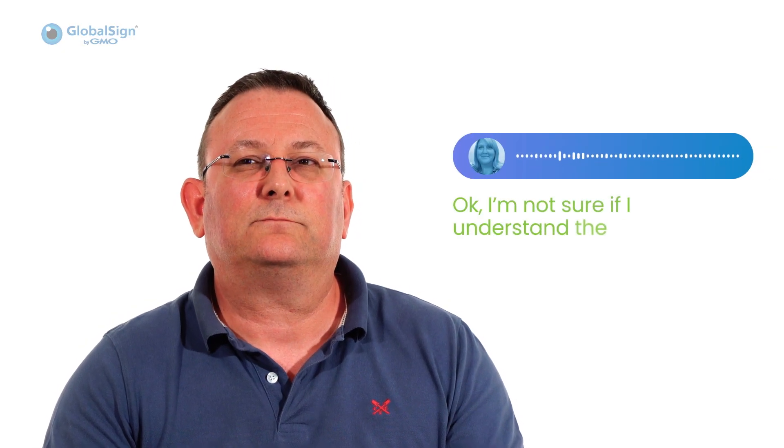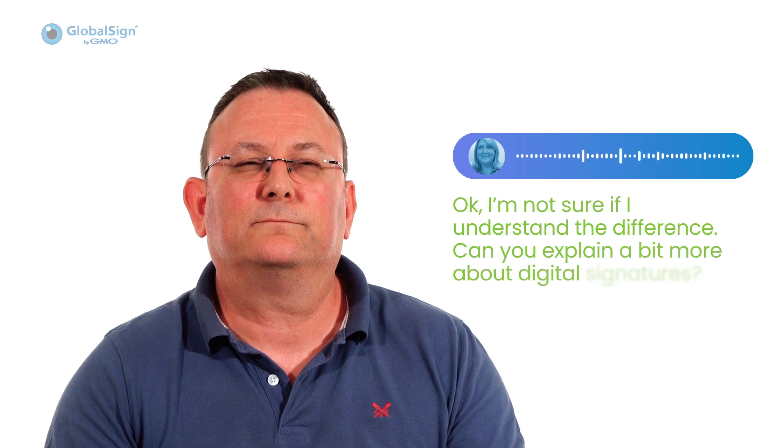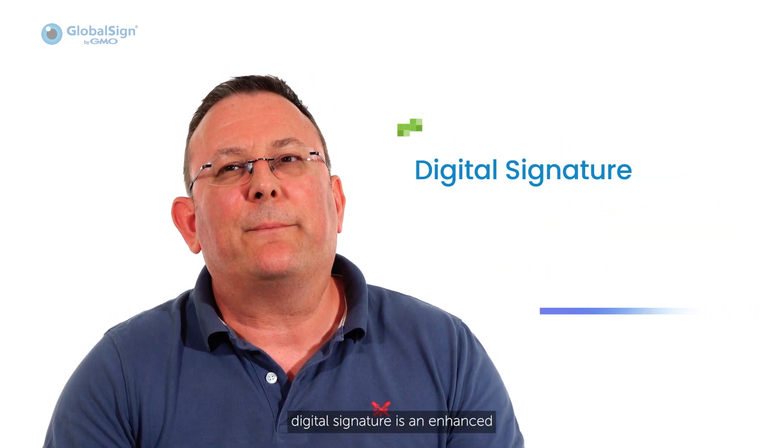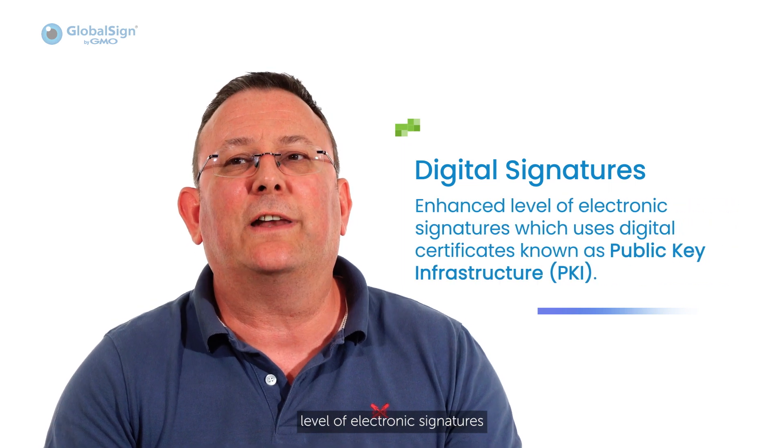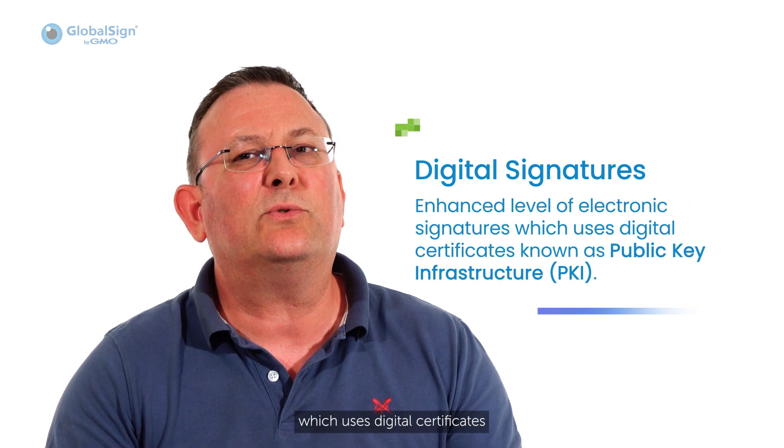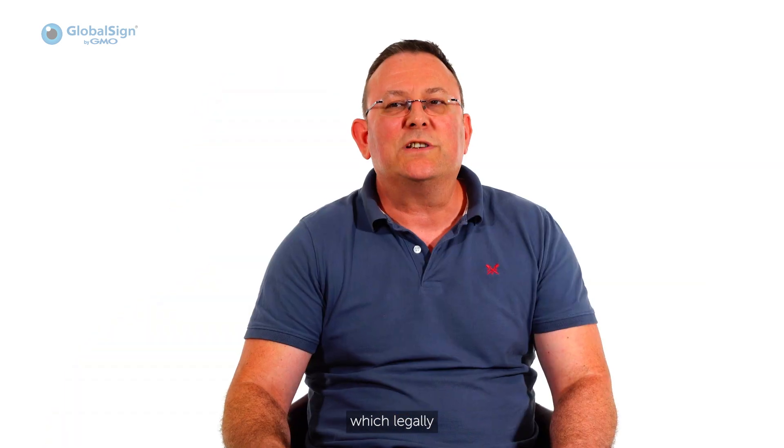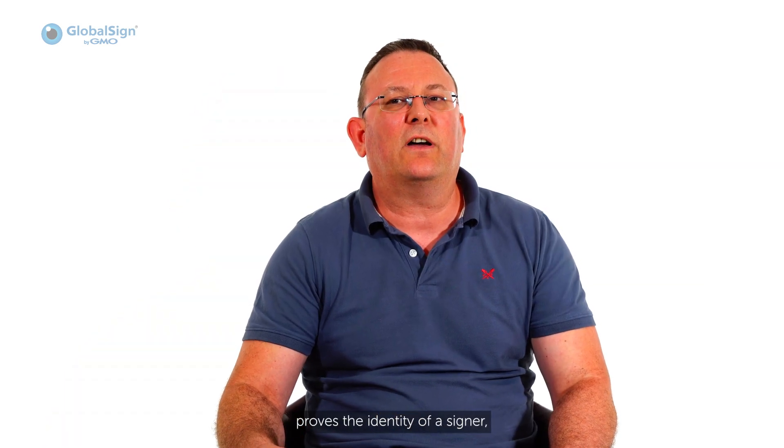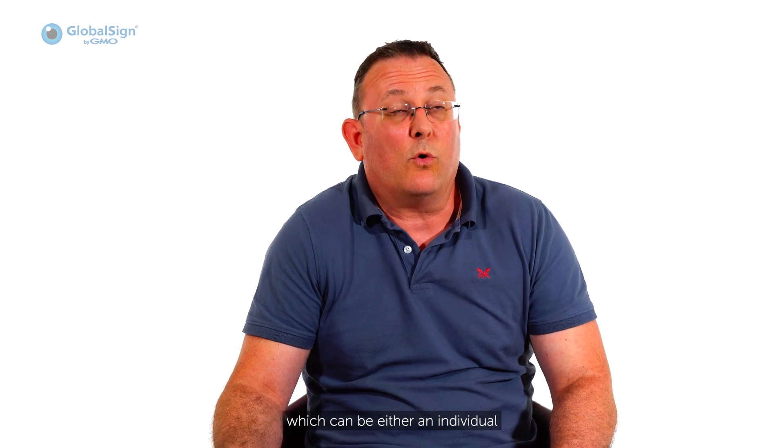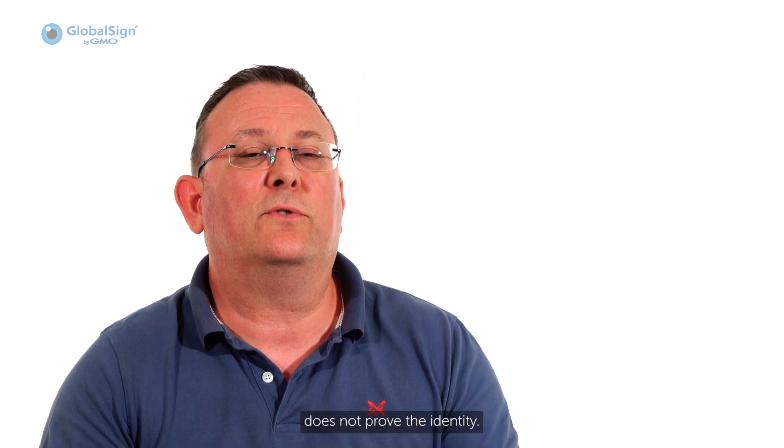Okay, I'm not sure I understand the difference. Can you explain a bit more about digital signatures? Of course. So a digital signature is an enhanced level of electronic signature which uses digital certificates known as PKI or public key infrastructure, which legally proves the identity of a signer, which can be either an individual or a business, whereas electronic signature does not prove the identity.